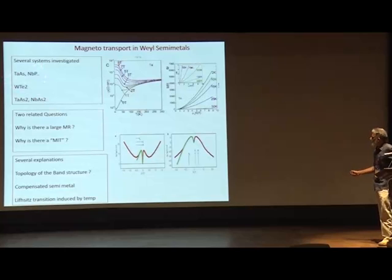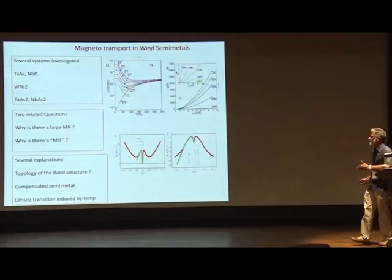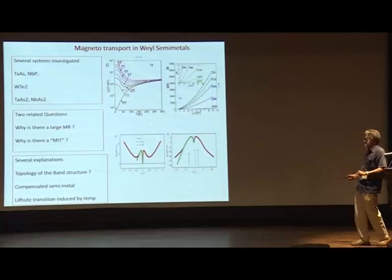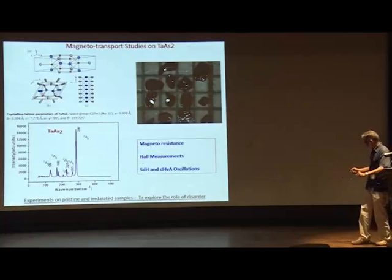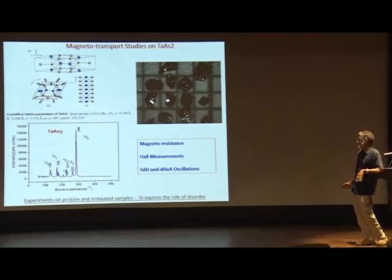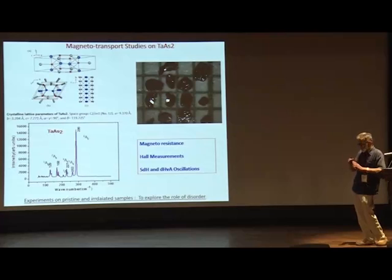Another question is whether there is a relationship between the large positive magneto resistance and the negative magneto resistance. We have worked on the TaAs₂ system. A priori this is not expected to be a Weyl semi-metal because the crystal is centrosymmetric, so you do not expect Weyl nodes.